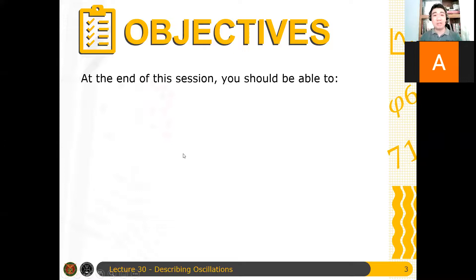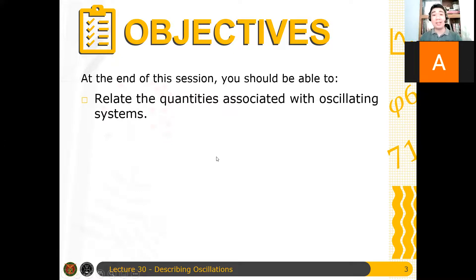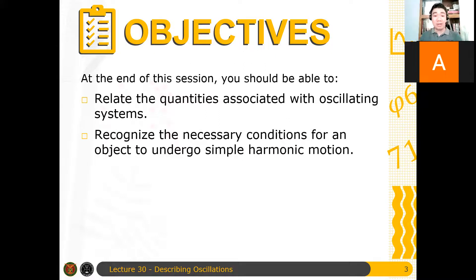Here are the objectives of Lecture 30. At the end of the session, you should be able to: first, relate the quantities associated with oscillating systems; and second, recognize the necessary conditions for an object to undergo simple harmonic motion. If you already know the equation of motion, you can predict the position, velocity, and acceleration as functions of time for an object in simple harmonic motion.